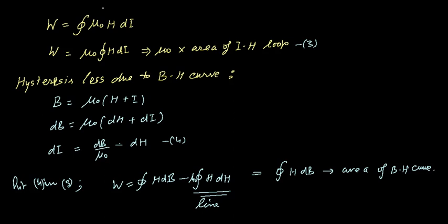In terms of the magnitude, I have taken this in terms of magnitude: μ₀H dI. W is equal to μ₀H dI, which means the area of the IH loop.